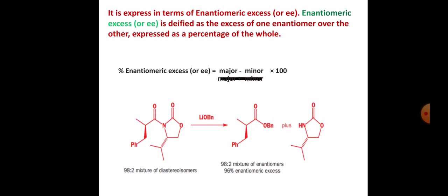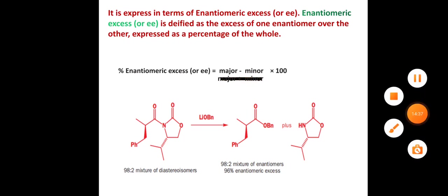In the exam, the question asks to define enantiomeric excess or calculate the enantiomeric excess of a given reaction. At that time, write the definition: the excess of one enantiomer over the other, expressed as percentage of the whole. Thank you.